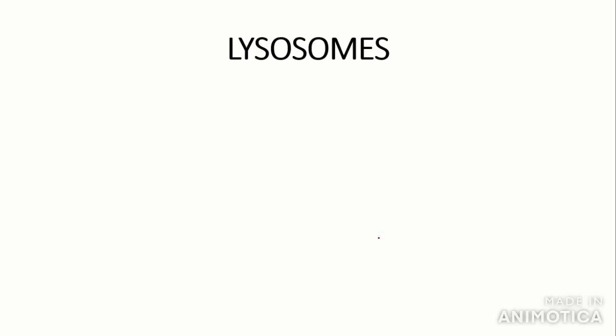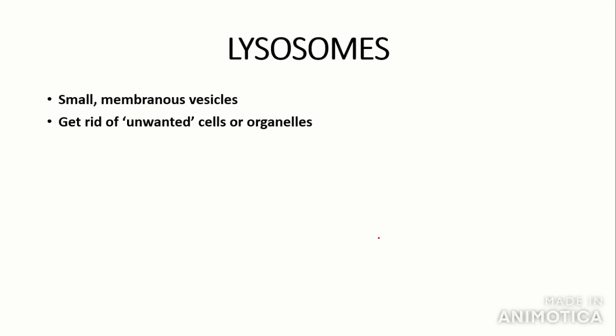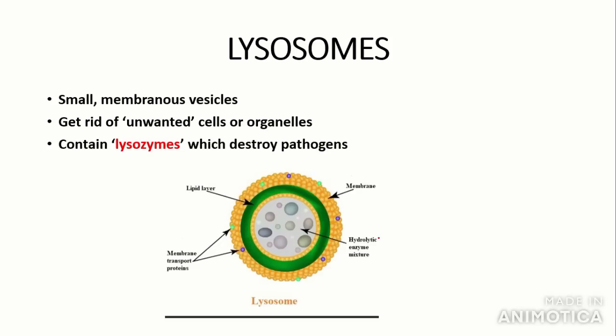Next we're going to talk about lysosomes. Lysosomes are small membranous vesicles whose main function is to get rid of unwanted cells or organelles that provide no benefit to the cell. They contain proteolytic enzymes — the term proteolytic means splits proteins. The main job of lysosomes is to destroy pathogens in the immune response in the process of phagocytosis. They are small spherical membranous vesicles; you don't need to know too much about their structure.